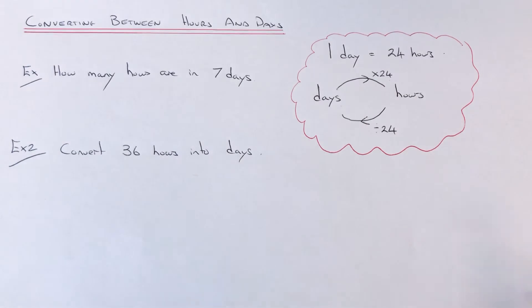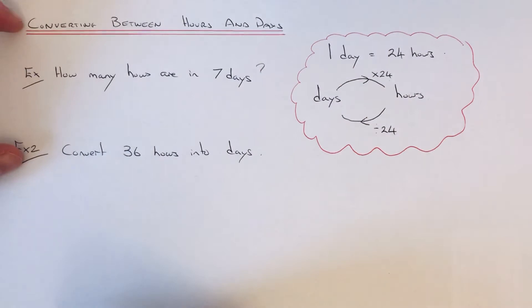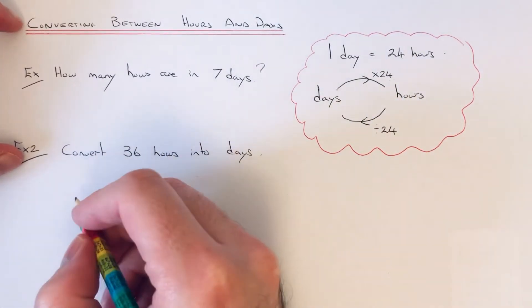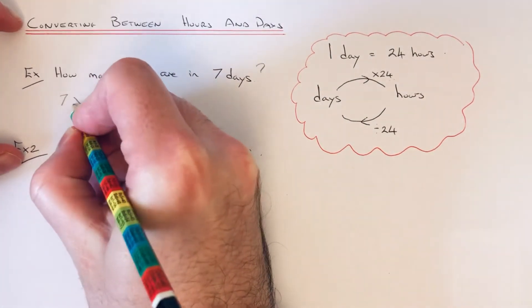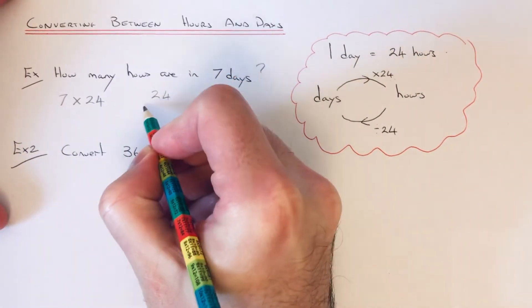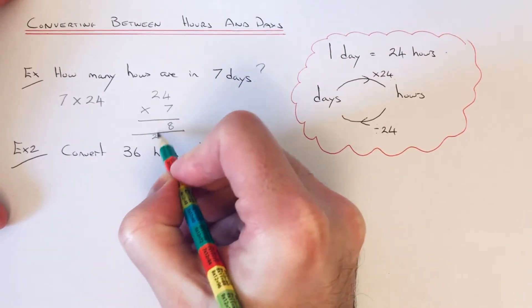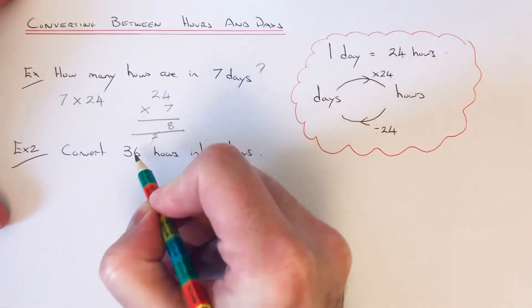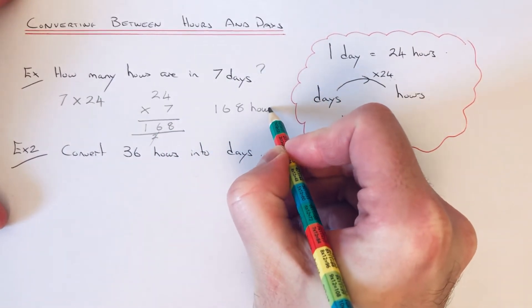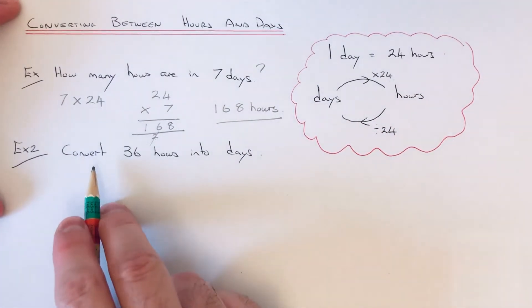Let's have a look at example one. How many hours are in seven days? To convert days into hours, we times our number by 24. So we do 7 × 24. You can do this on a calculator or by hand. 4 × 7 is 28, 2 × 7 is 14, plus 2 is 16. So the answer is 168 hours.